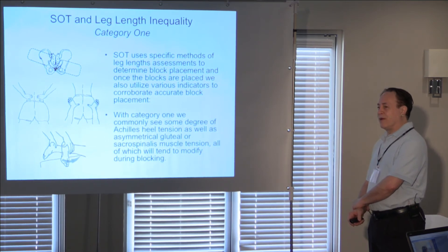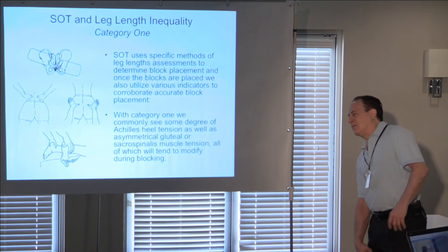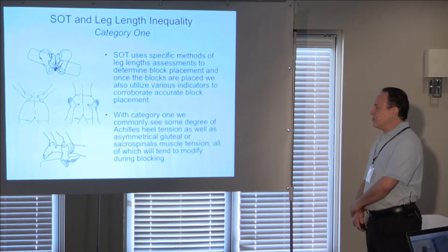With SOT we also have specific methods with each category so that after we place the blocks under the patient's pelvis we then go back and assess. And one of the things we're looking at is did the leg length equalize? Is the Achilles tendon or Achilles tension balanced more? Is there any asymmetrical gluteal or sacral spinalis tension? Is that balancing or changing or modifying?